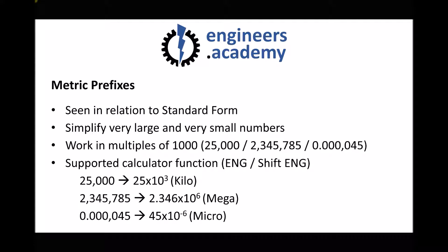Please note that these aren't the same as standard form. 25 times 10 to the 3 isn't expressed in standard form — in standard form that would be 2.5 times 10 to the 4. Similarly, 45 times 10 to the minus 6 in standard form would be 4.5 times 10 to the minus 5. We're not expressing these numbers in standard form; we're expressing them in a way that allows us to apply metric prefixes to them.